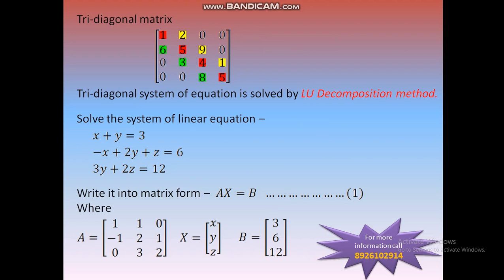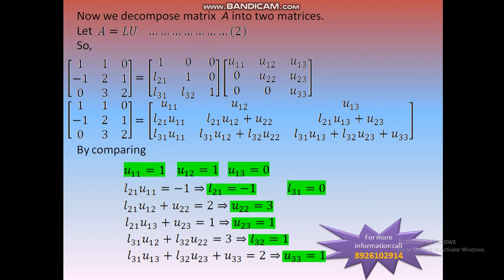x is the column matrix of variables: x, y, z. b is the constant matrix: 3, 6, 12. We can see this is the Tri-Diagonal System. Now we apply LU Decomposition — we decompose matrix A into two matrices L and U, where L is the lower triangular matrix and U is the upper triangular matrix.